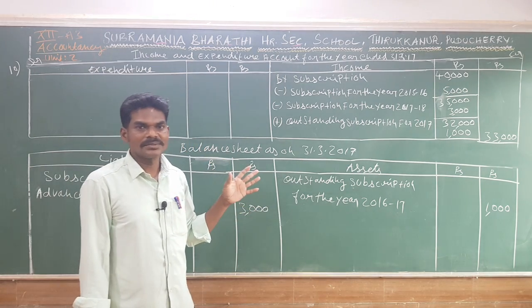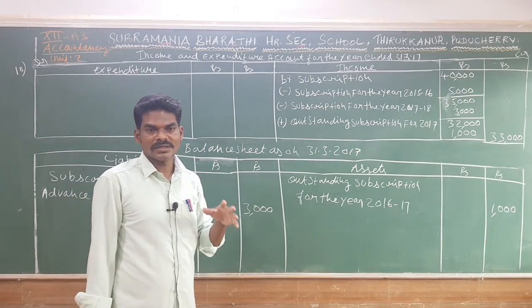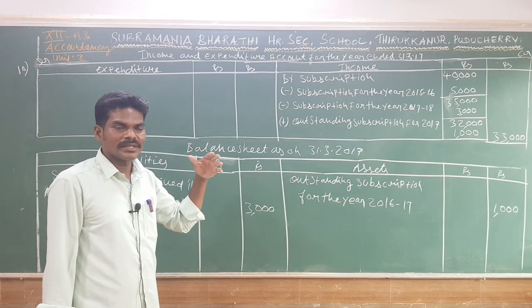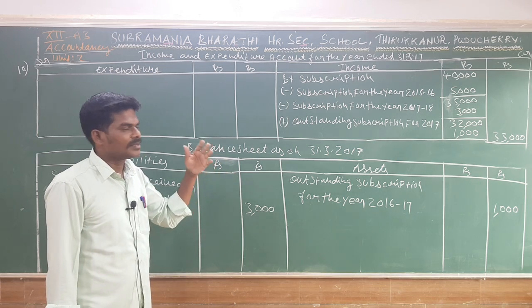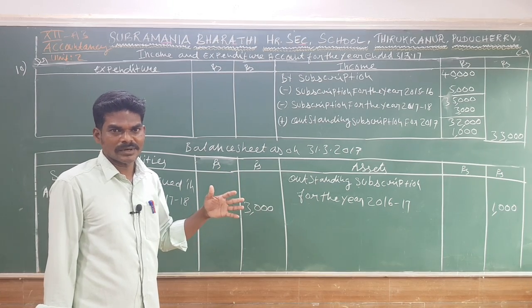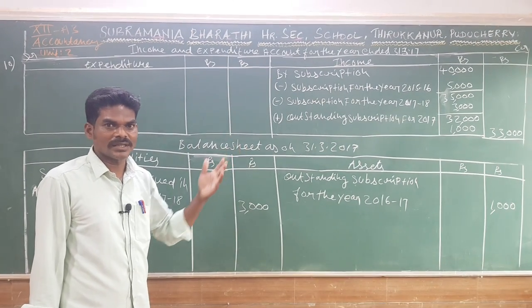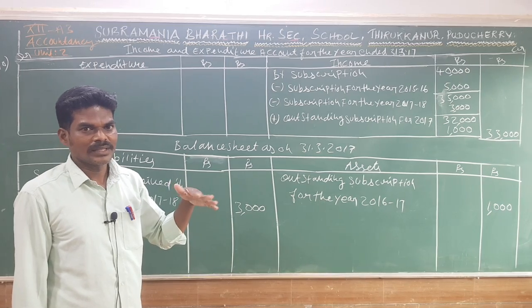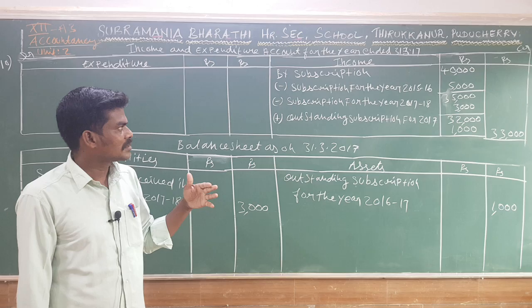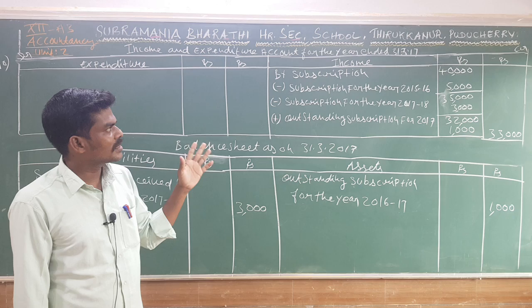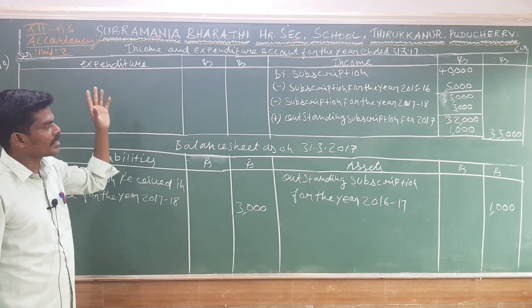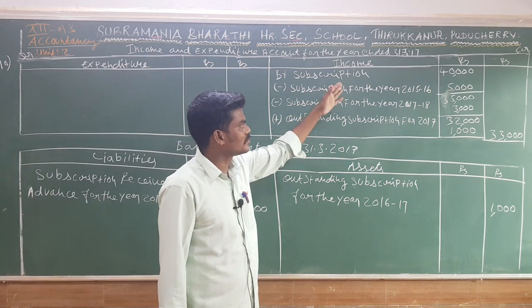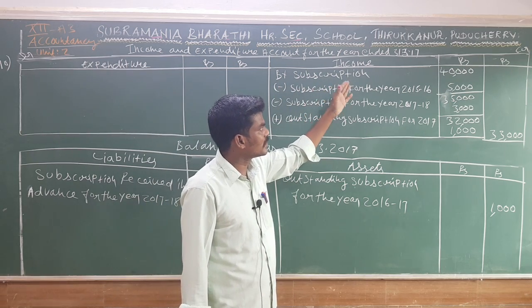In the final account, how will the subscription appear? In the income and expenditure account, the debit side is the expenditure side and the credit side is the income side. The first item on the income side is the subscription — specifically the current year subscription.